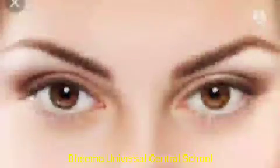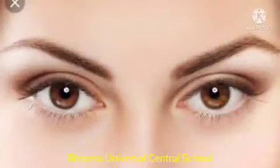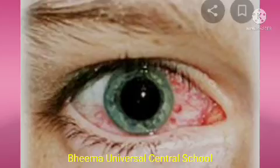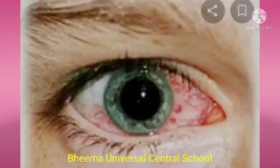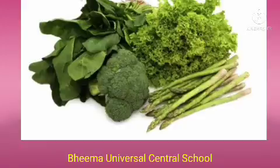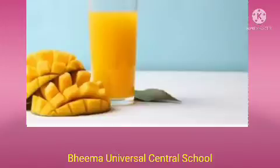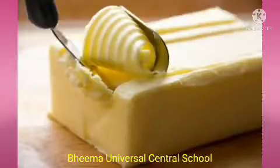First one is Vitamin A. Its functions are to keep eyes, hair, and skin healthy. Deficiency causes night blindness. Symptoms are dryness of the eye, improper vision especially during night or in dim light. Sources of Vitamin A are green leafy vegetables, carrot, mango, fruits, and butter.